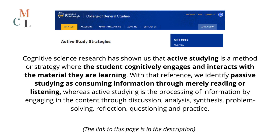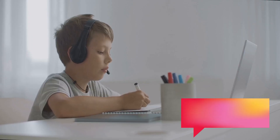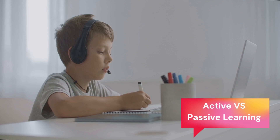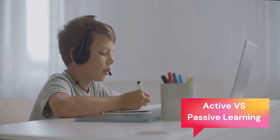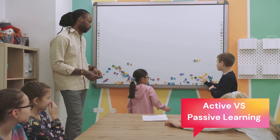As the University of Pittsburgh writes, cognitive science research has shown us that active studying is a method or strategy where the student cognitively engages and interacts with the material they are learning. With that reference, we identify passive studying as consuming information through merely reading or listening, whereas active studying is the processing of information by engaging in the content through discussion, analysis, synthesis, problem solving, reflection, questioning, and practice. So basically, passive studying means acquiring a language, while active studying is when you put it to use, engaging with it on a deeper level.